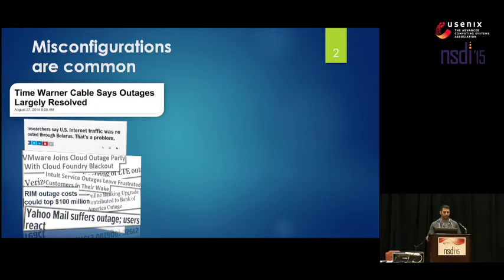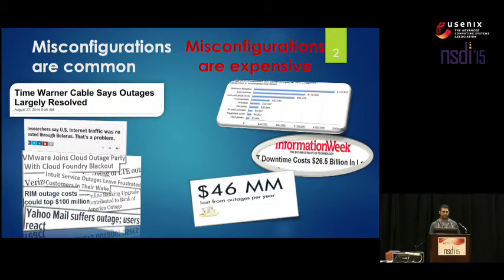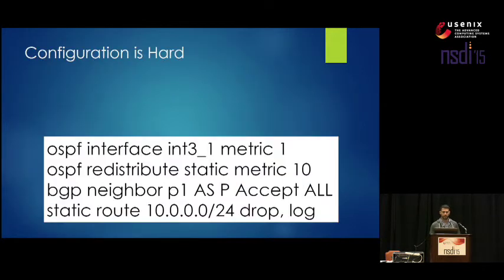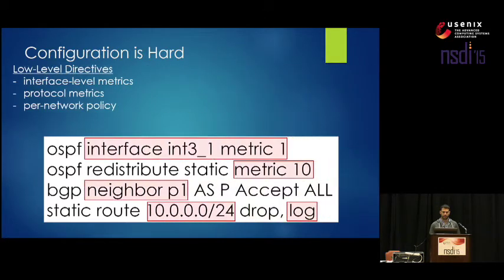Misconfigurations in networks are extremely common. Just last year, a major bug in Time Warner's network configurations caused an outage affecting all of their customers for multiple hours. These misconfigurations are extremely expensive, so we would like to avoid them. The main reason they happen is that configurations contain a ton of low-level directives such as interface-level metrics, protocol metrics, per-network policy, per-peer policy, instrumentation, management — all these things that we hope map to high-level intent.